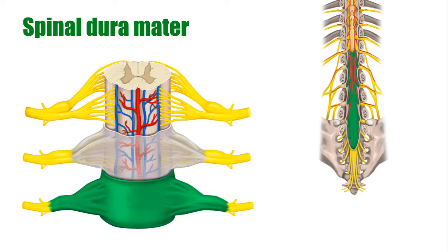The dura mater forms a dural sac that envelopes the cauda equina of the spinal cord and extends downwards, together with the filum terminale, to the periosteum of the coccyx.